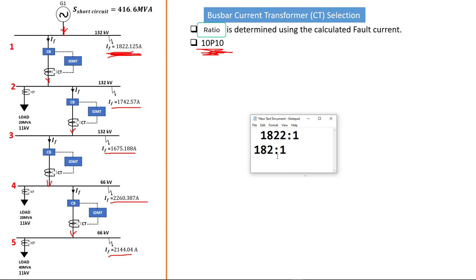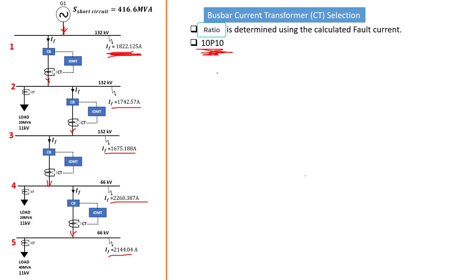You're not going to get a current transformer that gives you exactly this 182 to 1 ratio — there are already current transformers with standard values designed and sold by manufacturers. For instance, for 182, you're going to get a 200 to 1 ratio — this is a standard CT ratio, so that is what you select for the particular bus bar. Your current transformer will give you a ratio error of 10% based on the accuracy limit factor you choose. Even if your fault reaches 10 times the rated value, you're still going to get a 10% accuracy of error, after which the CT will reach saturation and become useless.